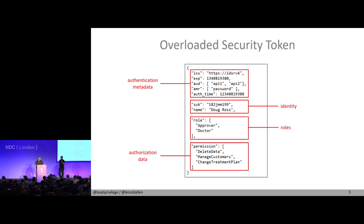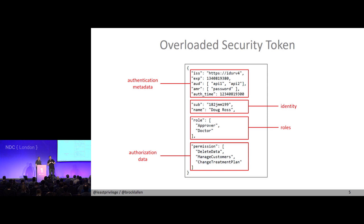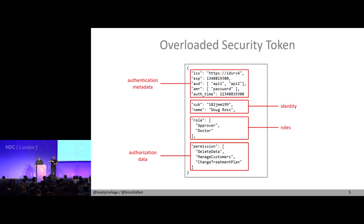Many people use roles. In my mind, there are two types of roles: identity roles, which come from the identity system. My hospital customer has exactly three roles — doctor, nurse, and patient — and there is no situation where a user is in more than one role. Roles can be OK if they are identity roles. But if you're using roles purely for authorization, you're crossing that line of separation between identity and permissions.